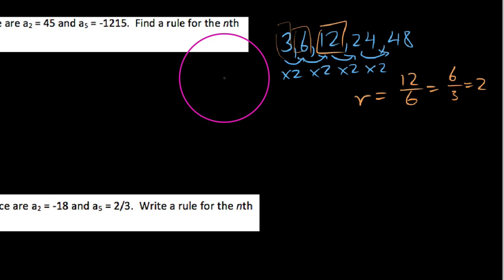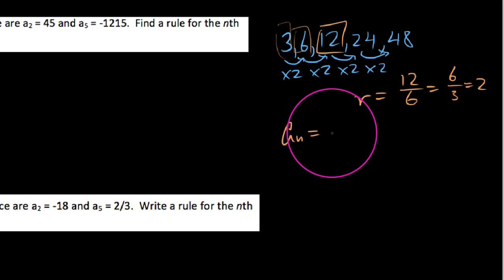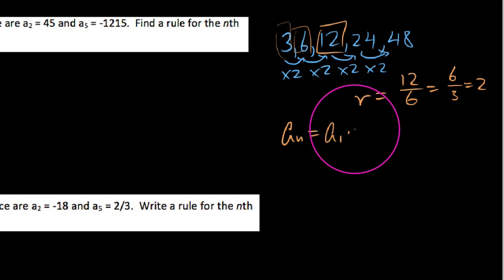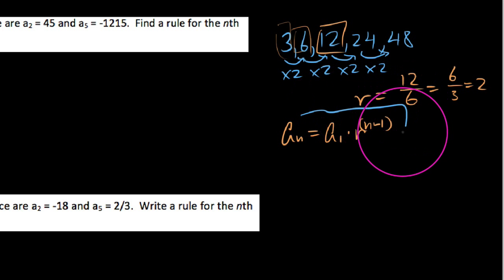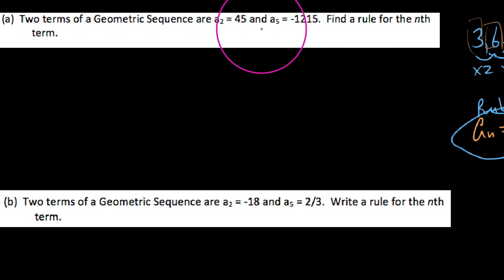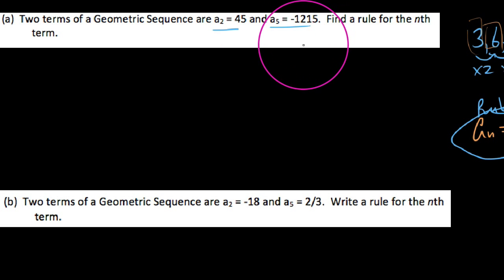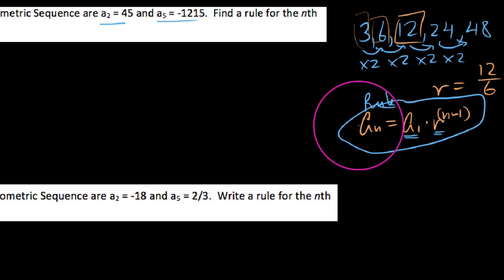That would be what we mean by a geometric sequence. Recall that with geometric sequences, the rule for the nth term is: a sub n equals the first term times the common ratio to the n minus 1 power. What I want to do is find the rule for the nth term, but only if I've been given 2 data points — so I know the second term and the fifth term, but I don't know the first term or the common ratio, which are the 2 things I need to write this rule.